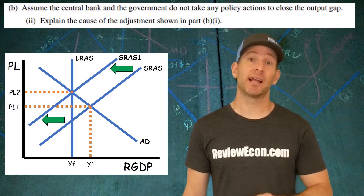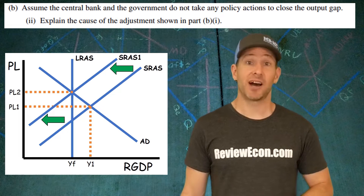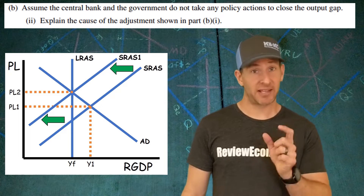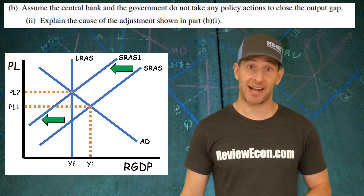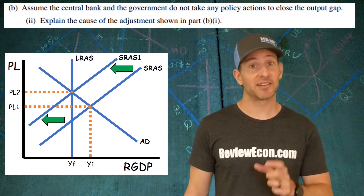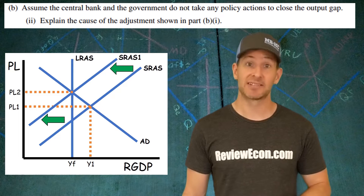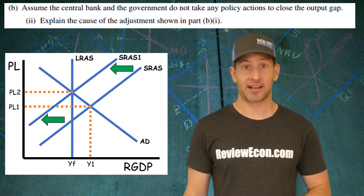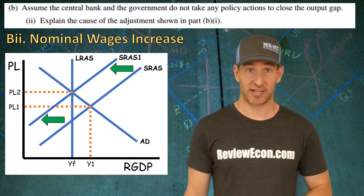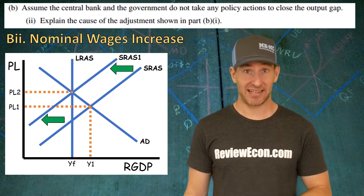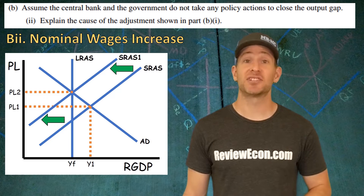For the second part of B we need to explain the mechanism that causes the short-run aggregate supply curve to shift to the left, closing that inflationary gap. The mechanism comes from the fact that workers are being overworked because the economy is producing greater than the long-run potential. Overworked workers will eventually demand higher wages. Other resource prices will also increase because other resources are being used to their maximum potential. When wages and other resource prices increase, that causes an increase in input costs for businesses, which causes the short-run aggregate supply curve to shift to the left. Wages are inflexible or sticky in the short run, but in the long run they will flex and adjust, bringing us back to long-run equilibrium. If you just say wages increase, you've got your point.